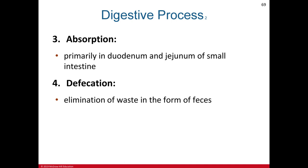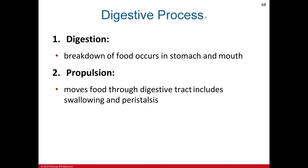The digestive processes are: digestion — the breakdown of food occurring in the mouth and stomach, beginning with mechanical digestion in the oral cavity; propulsion — the movement of food through the digestive tract, including swallowing and peristalsis; absorption — primarily occurring in the duodenum and jejunum of the small intestine; and defecation — the elimination of waste substances in the form of feces.